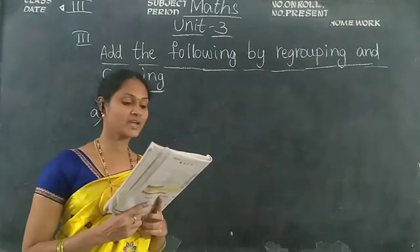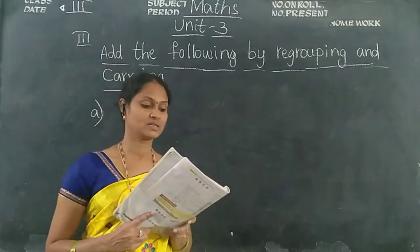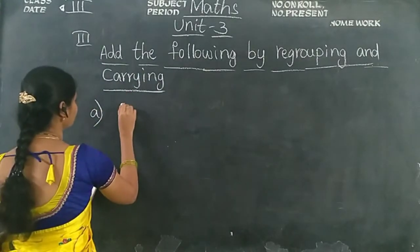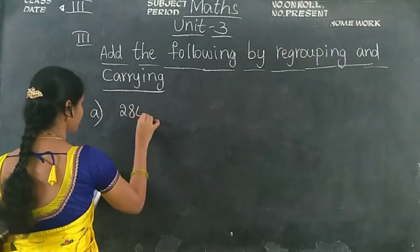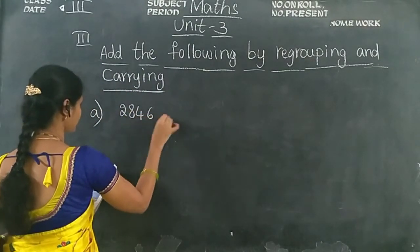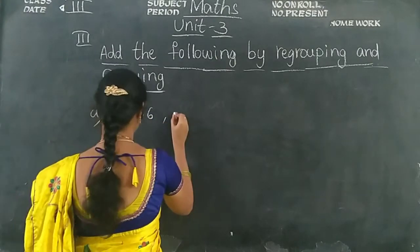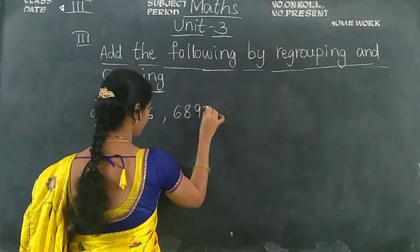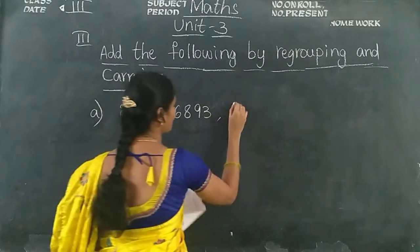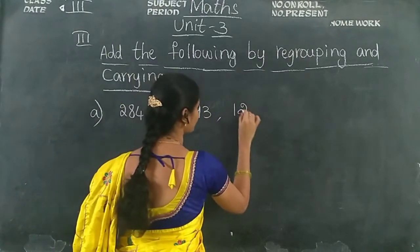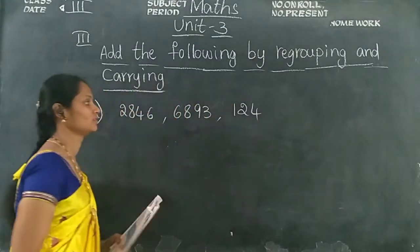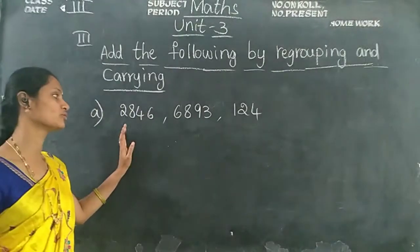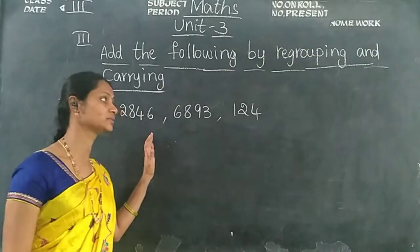In the term book they are given some sums for students. The numbers given are 2,846, 6,893, and 144.